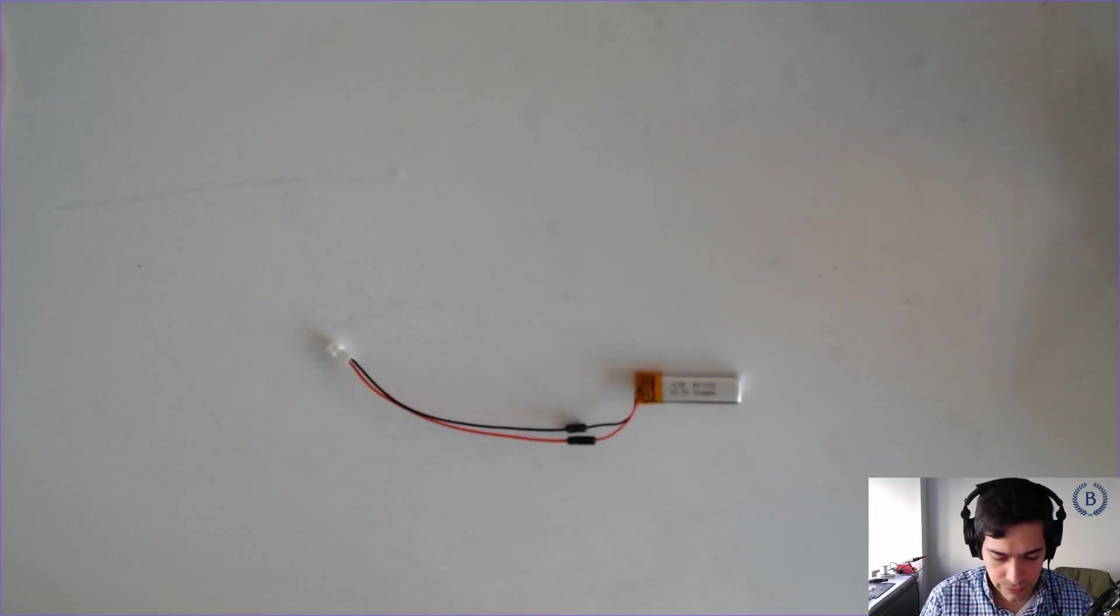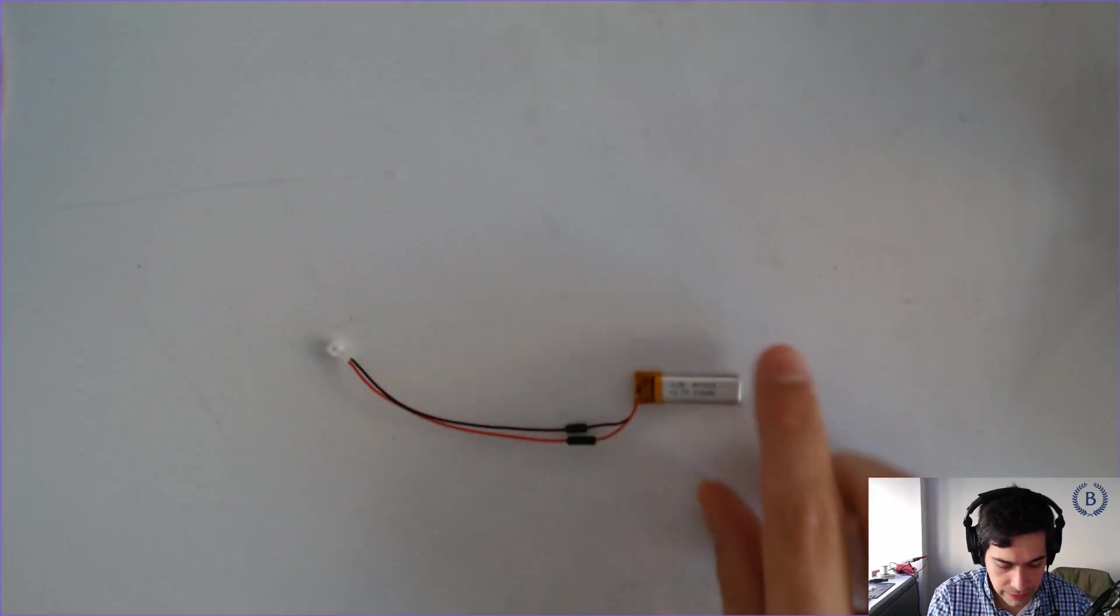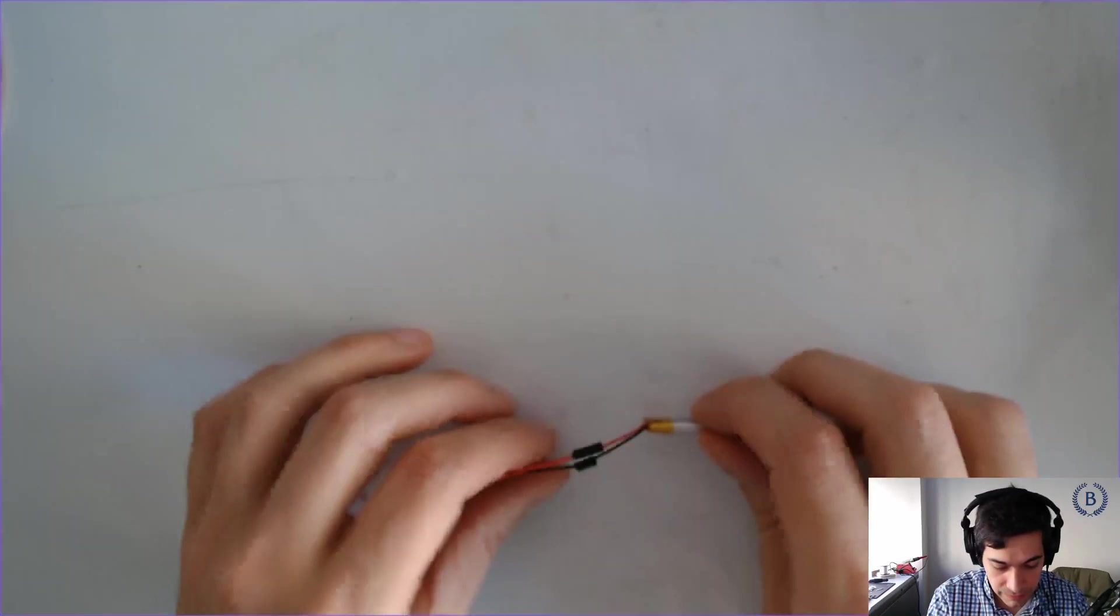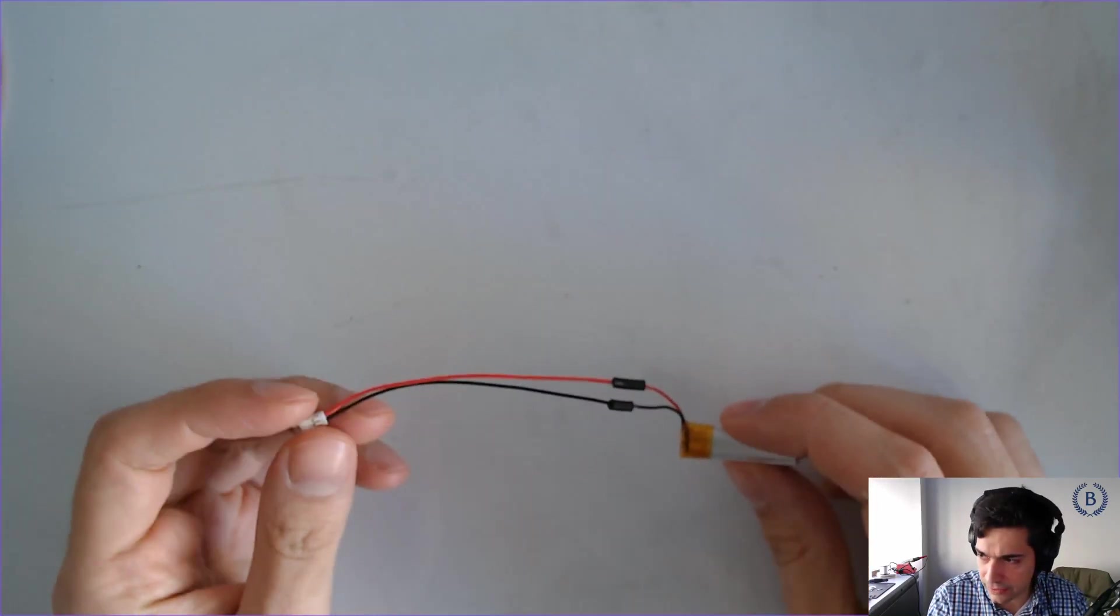Okay, we're going to learn how to solder a tiny little JST connector to our tiny little 130 amp hour battery. So here's an example of the one that I've already done.